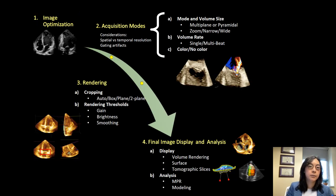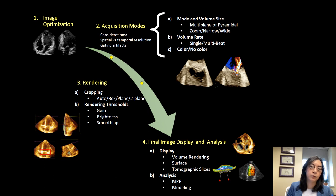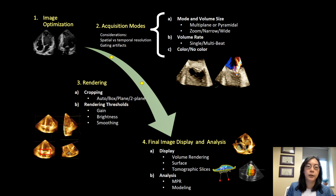In summary, the steps I recommend for acquiring a 3D data set are: first, optimize your image; then decide on your acquisition mode — the pyramid size, whether the volume rate is high enough or you need to go to multi-beat, whether you can deal with gating artifacts, and whether you want color. After deciding acquisition mode, decide about cropping before or after and how to crop. Then adjust your rendering thresholds — gain, brightness, smoothing, or tissue characteristics. Finally, decide how to display it and whether you need further analysis for quantitative measurements.